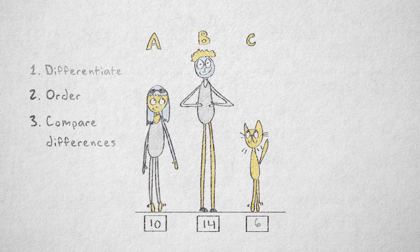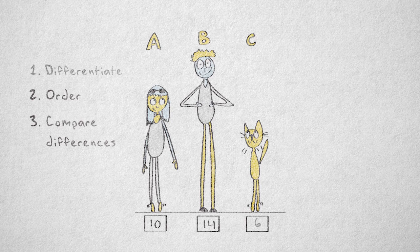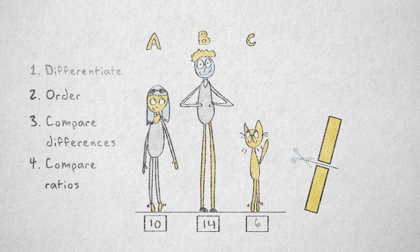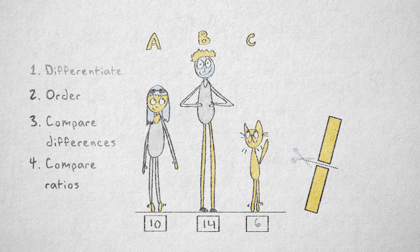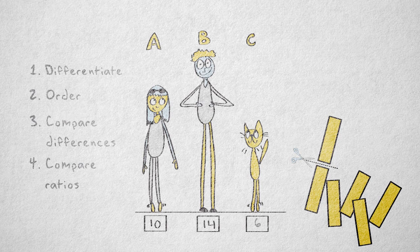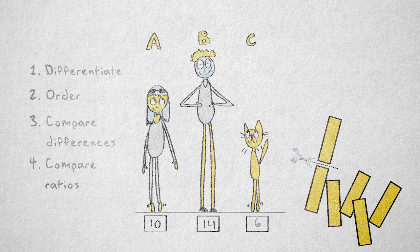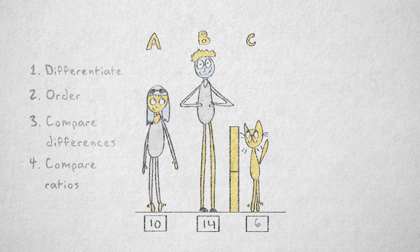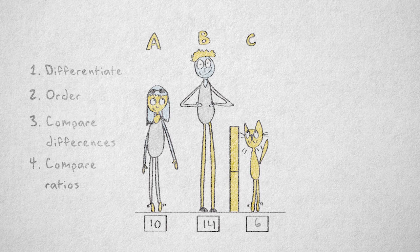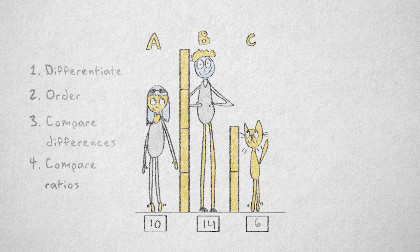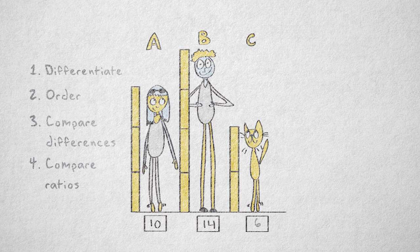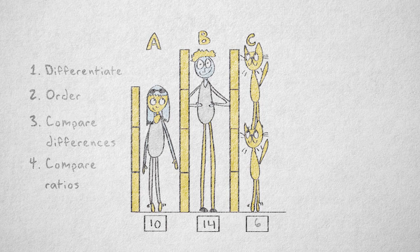There's one more type of relation we can observe for the property body length. We can compare ratios of body length. We could take the piece of cardboard we cut out earlier, cut some extra pieces of exactly the same length, and see how many cardboard units C, A, and B are tall. Okay, now suppose it takes two cardboard units to reach the top of C's head, four to reach the top of B's head, and three to reach the top of A's head. This means B is twice as tall as C.